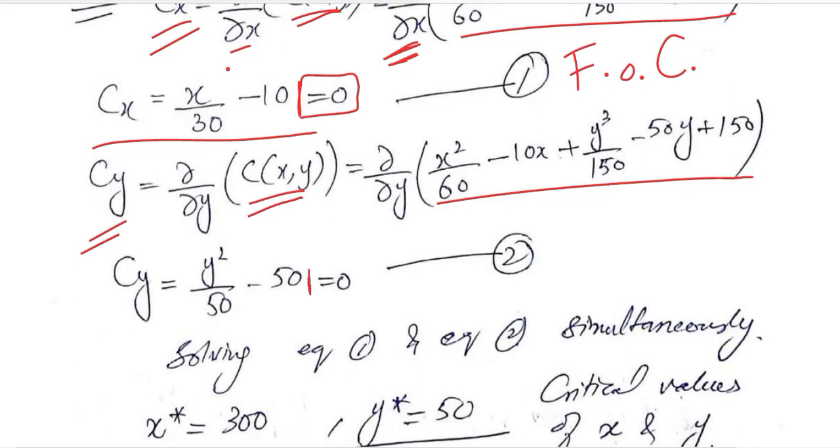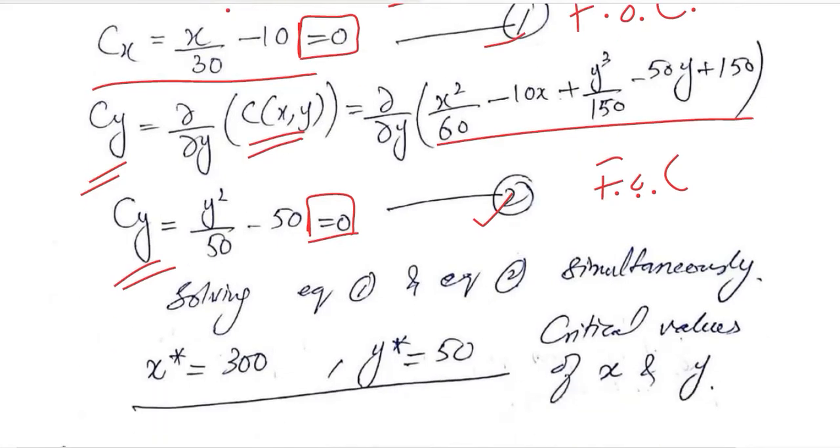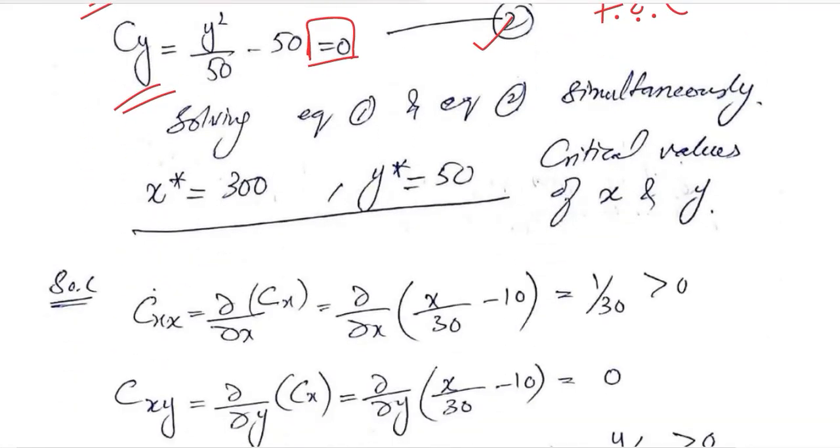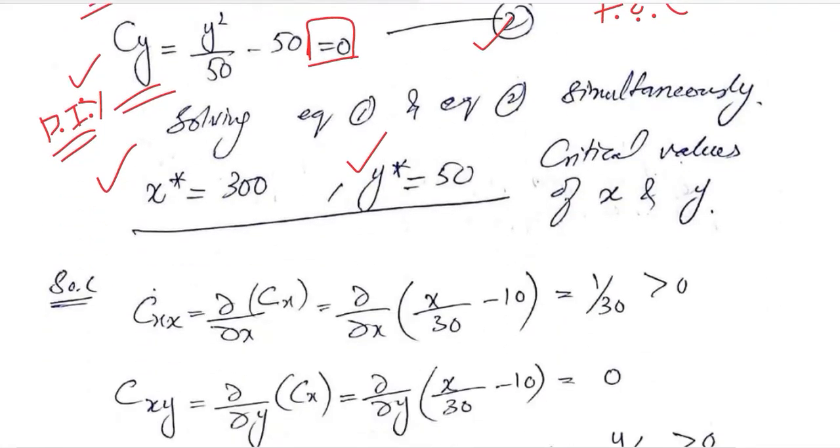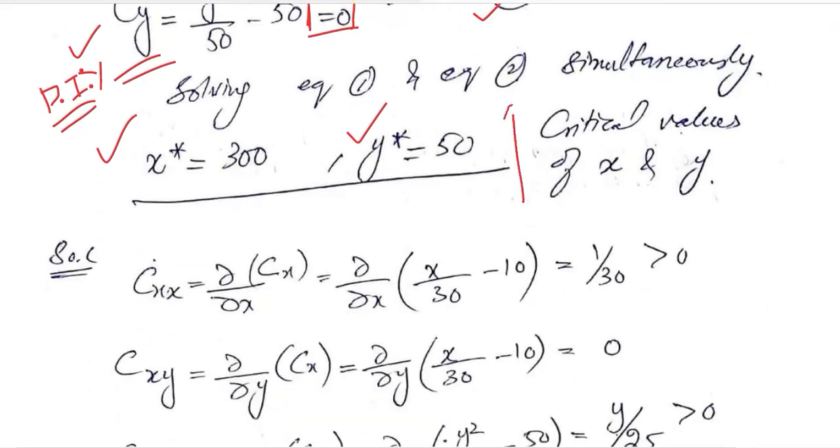The answer will be equal to 0 because of the first order condition requirement. So we have these two equations, Cx and Cy. We can solve them simultaneously. After solving these two equations, we get the critical values of X and Y. You can do this yourself with simple algebra.